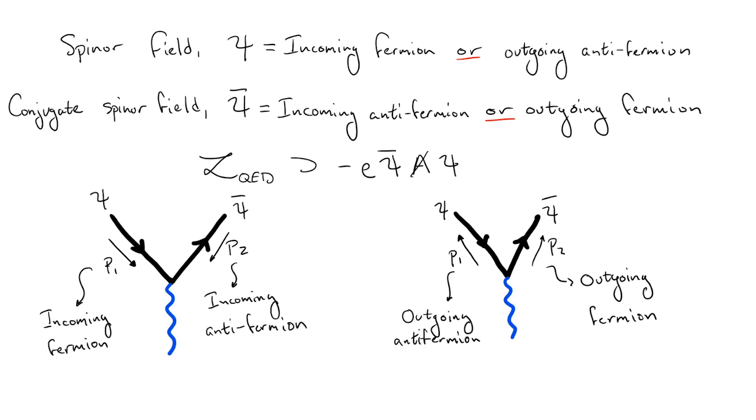Let's look at an example in QED. Say we want to consider the case where we send in an electron and a positron, they interact, and we get an electron and positron out, a process known as Bhabha scattering.